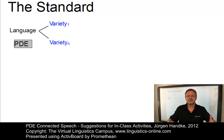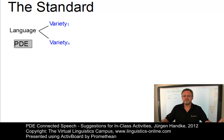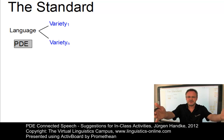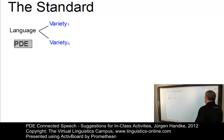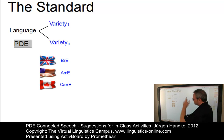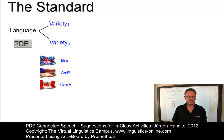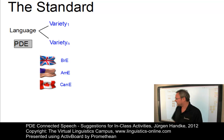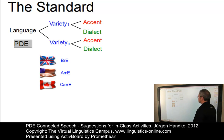The varieties of a language can be defined on the basis of linguistic or non-linguistic, for example social, parameters. In our class we are doing it on the basis of linguistic parameters. So what are the main varieties of present-day English? You would come up with British English, American English, Canadian English, Australian English, and so on. Now these varieties can be subdivided into dialects and accents.